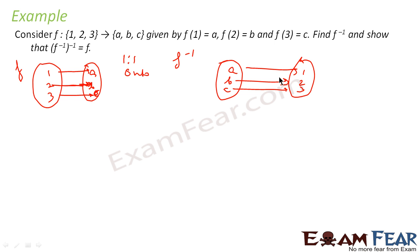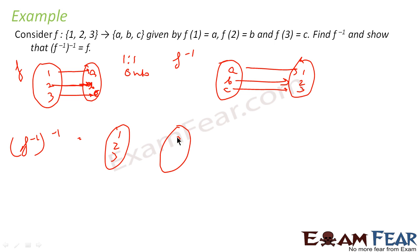Now we have to prove that (f⁻¹)⁻¹ = f. To find (f⁻¹)⁻¹, we flip f⁻¹ once again. The domain becomes {1,2,3} and the codomain becomes {a,b,c}, with 1→a, 2→b, 3→c. If you see, this is exactly f. So we can conclude that (f⁻¹)⁻¹ = f.